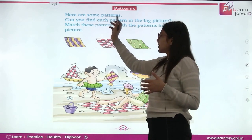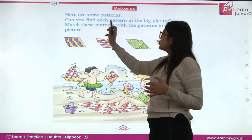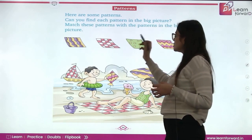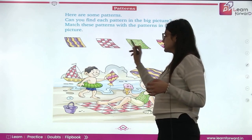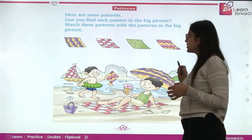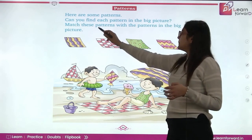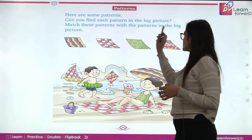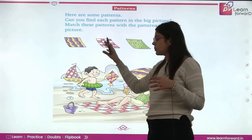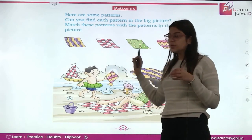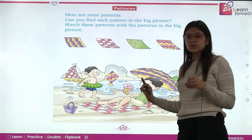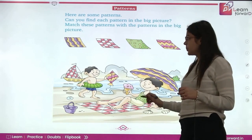Here are some patterns. Can you find each pattern in the big picture? Jo ye patterns hai, sab is big picture mein hume point karne hai. Match these patterns with the patterns of the big picture. Hum in patterns ko bade wale pictures mein jahan pe hai, unse match karne hai.